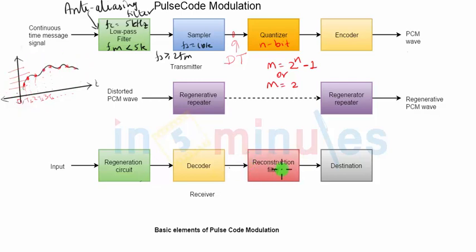Once we pass it to a reconstruction filter, the reconstruction filter will be similar to a low-pass filter. It will smoothen the signal, it will remove all the high-frequency components from the signal, and the output of the filter will be very much similar to the original analog signal that we have. The destination can be any output device to which the reconstructed signal will be given.